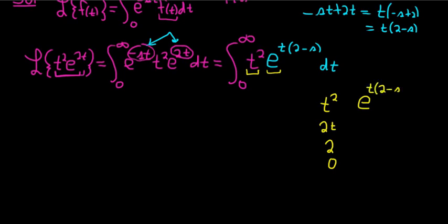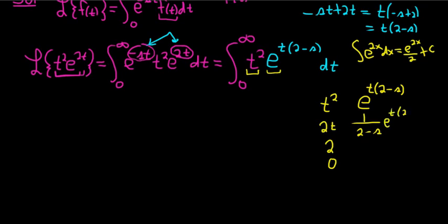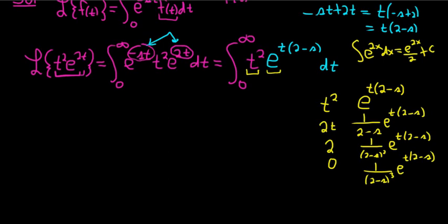When you integrate something like e to the 2x dx, you just get e to the 2x divided by 2. So here we just keep dividing by (2 minus s). So it will be 1 over (2 minus s) times e to the t(2 minus s). Doing it again: 1 over (2 minus s) squared times e to the t(2 minus s). And one more time: 1 over (2 minus s) cubed times e to the t(2 minus s). The last thing we do is insert the signs — we always start with plus, so it's plus, minus, plus, minus — and then we just follow the arrows.